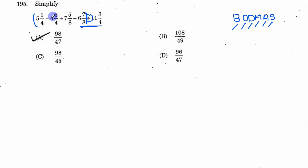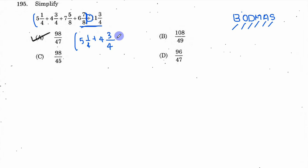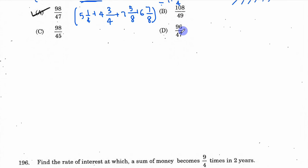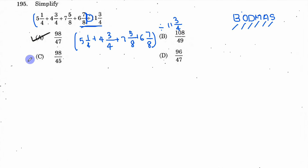Now, looking at the answer options, the question gives us: 5 and 1/4, plus 4 and 3/4, plus 7 and 5/8, plus 6 and 7/8 — that is divided by 11 and 3/4. So now we solve this format.